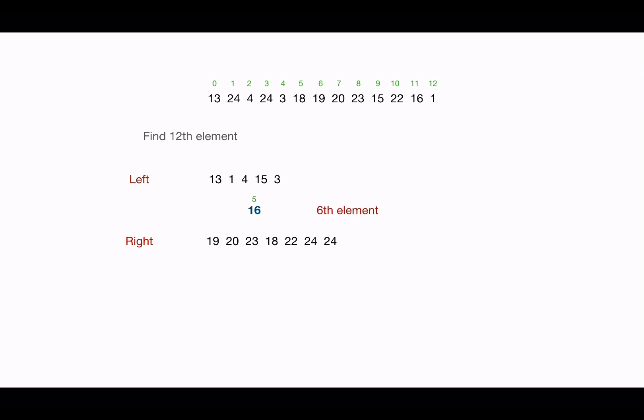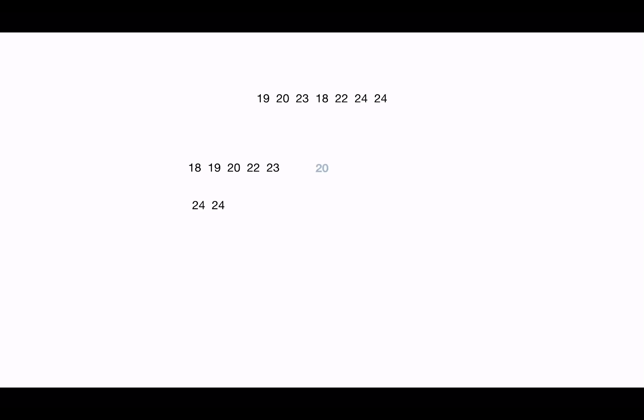Taking the right subarray, we again divide it into chunks of five elements, sort these arrays, find the medians of each, and then find the median of these two medians. So 24 is our new pivot. Taking one iteration over this subarray, we get 24 at index 12. But the index we need is 11, so we check left and right — this time there are no elements to the right of index 12, so we take the left subarray to find the median.